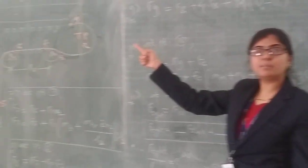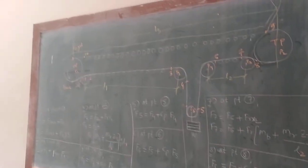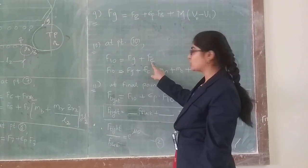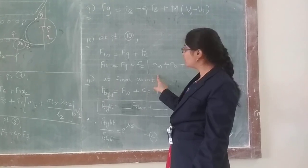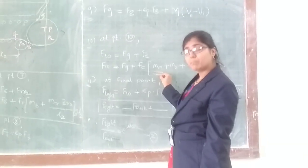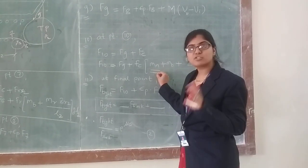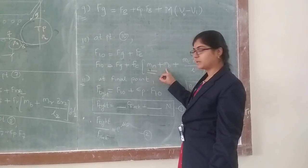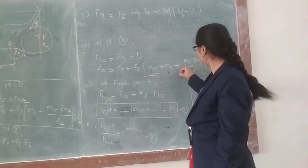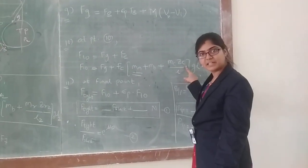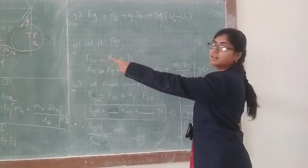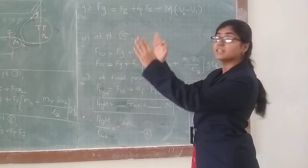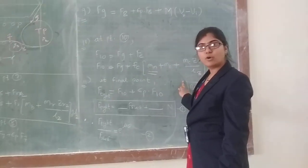At point ten, after point nine, you will take point ten after the carrying idler. F10 will be equal to F9 plus the frictional resistance due to the carrying idler. In the formula, there will be addition of Mb and Mm — because the carrying idler supports both the mass of the belt as well as the mass of the material. So: fr into (Mm in kg/m plus mass of carrying idler) into the number of carrying idlers upon L. Out of L1, L2, L3, you will take L3, because you have used the carrying idler for length L3. So you will get the value of F10.